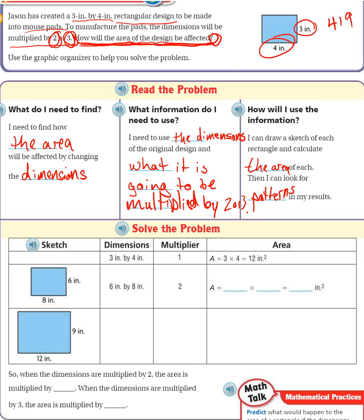So let's solve the problem. In this first example right here, they multiplied by 2. So you can see the bottom here was 4, 4 times 2, that's how they got this 8. And then the side was 3, and they multiplied that by 2 and got 6. So the dimensions are now 6 by 8. The multiplier was 2. They multiplied by 2.